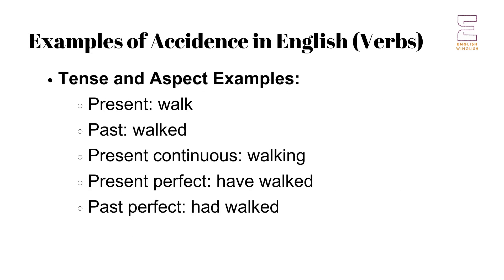Examples of accidents in English. In English, accidents is evident in various word forms, particularly in verbs, nouns, pronouns, and adjectives. Here are some examples. Verbs — Tense and aspect: the verb 'to walk' inflects to show different tenses and aspects.